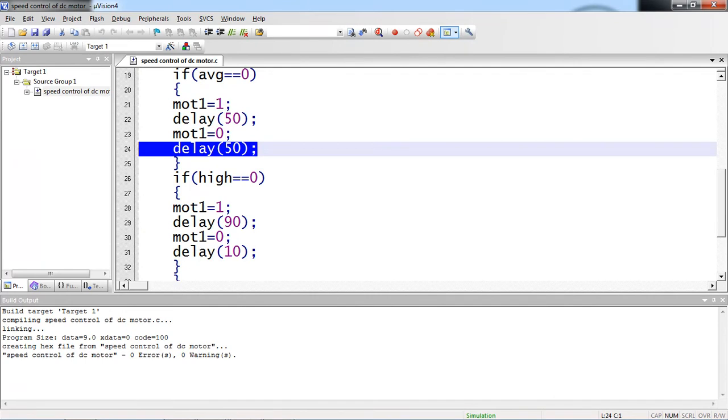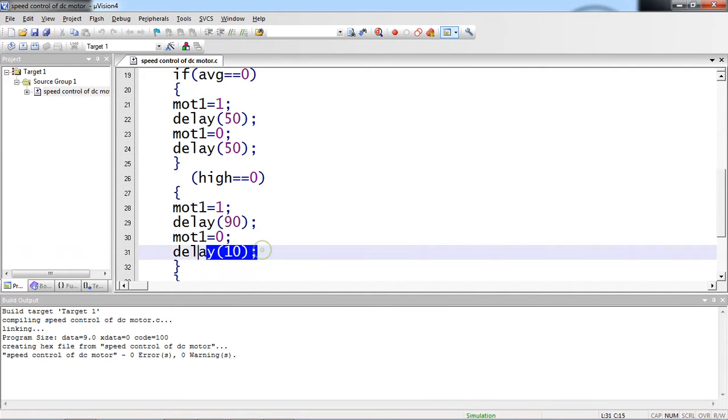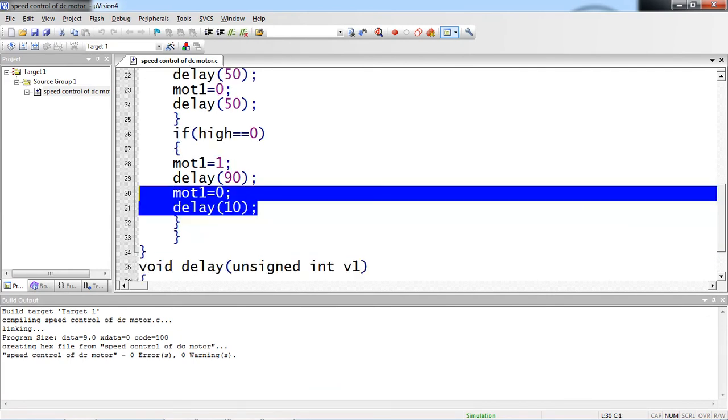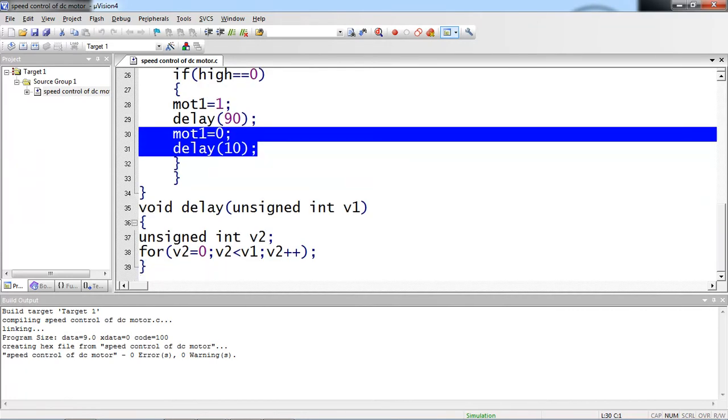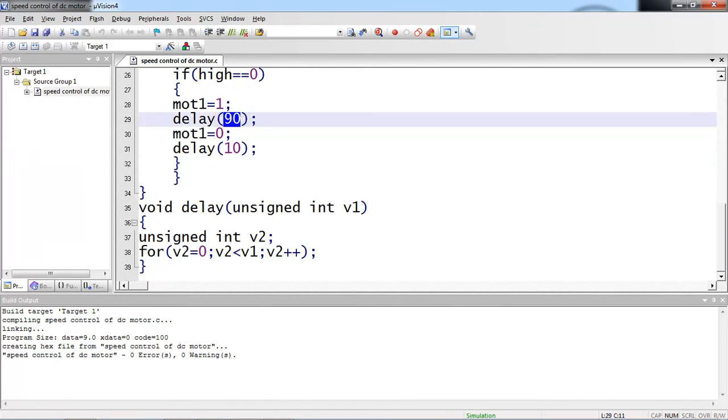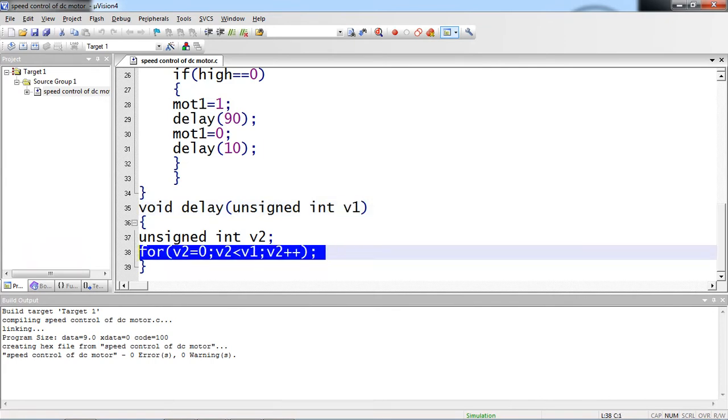Whereas high logic, motor one is one. This means more on time and less off time for your motor input logic. And delay function, whatever argument you are passing here is given to this temporary variable V1. This is a for loop. Until it becomes zero, you keep on incrementing.